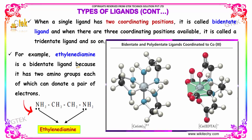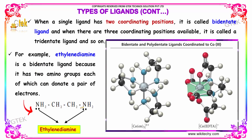For example, ethylenediamine is a bidentate ligand because it has two amino groups, each of which can donate a pair of electrons.